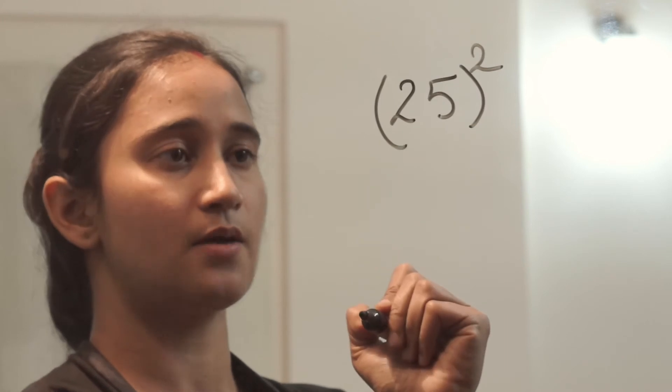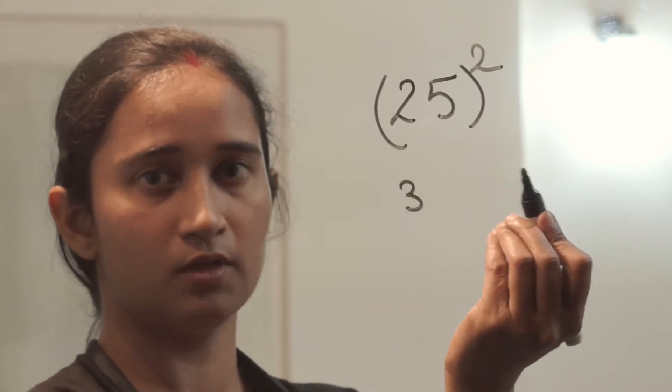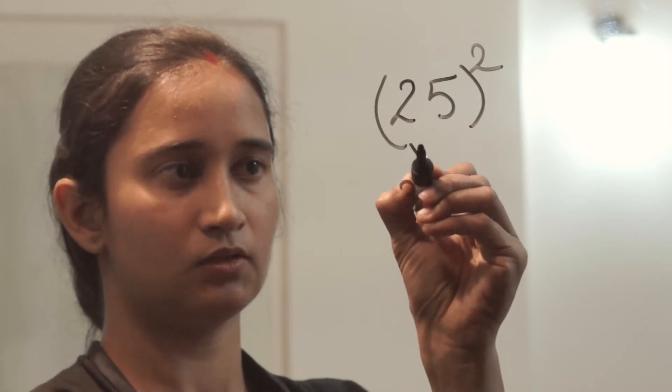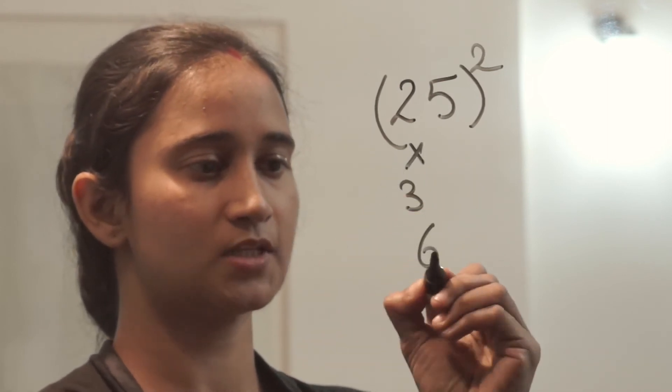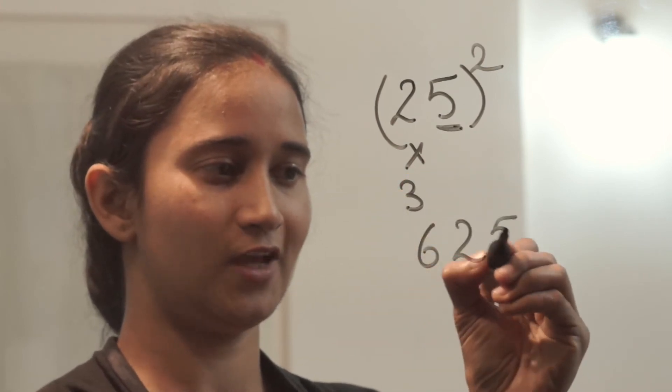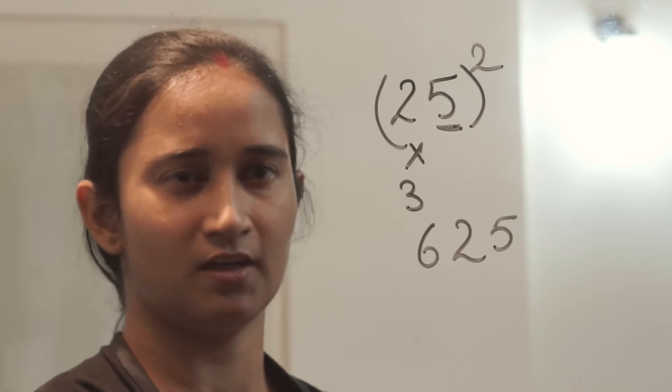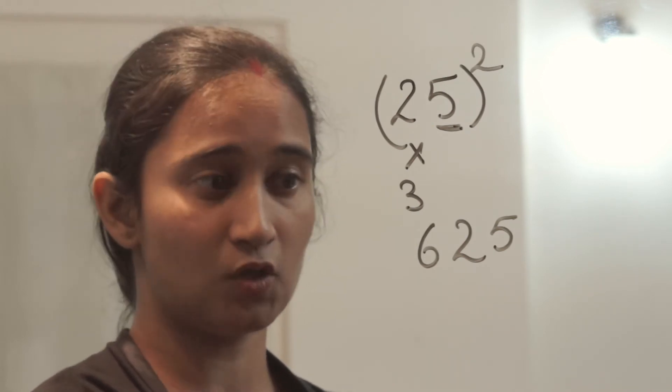So what is the next number of 2? 3. What we have to do? Multiply 2 by 3. 2 times 3 is 6. What is the square of 5? 25. So my answer is 625. Very simple. And so quick.